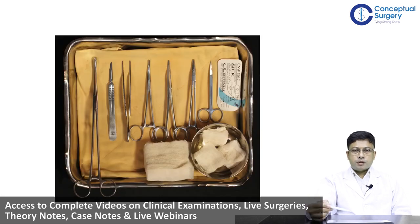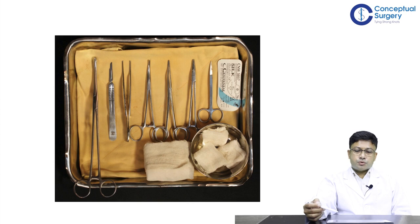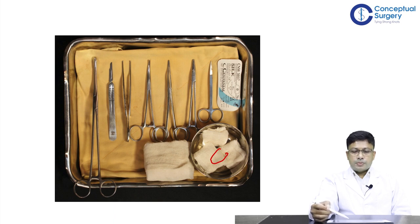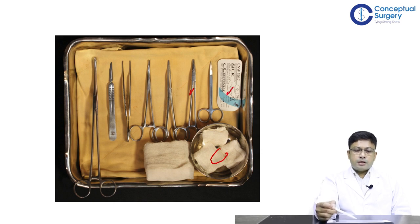This photograph shows all the necessary surgical instruments required at the time of chest tube placement. We should have sterile gauze pieces in a bowl with povidone-iodine or chlorhexidine gluconate solution for painting the operating site. We need a needle holder, a silk suture for fixation of the tube, and curved artery clamps for blunt dissection and insertion of the tube into the pleural cavity.